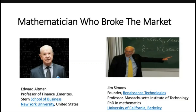Before talking about money and how you can use mathematics, let's talk about two people who actually broke the market. First, Jim Simons — most of us have heard about him. He is popular for string theory, he is a mathematician, and for some time he was a professor at MIT. He got his PhD from the University of California, Berkeley. He is also the founder of Renaissance Technologies, which is a hedge fund company that uses mathematical models to predict the market.